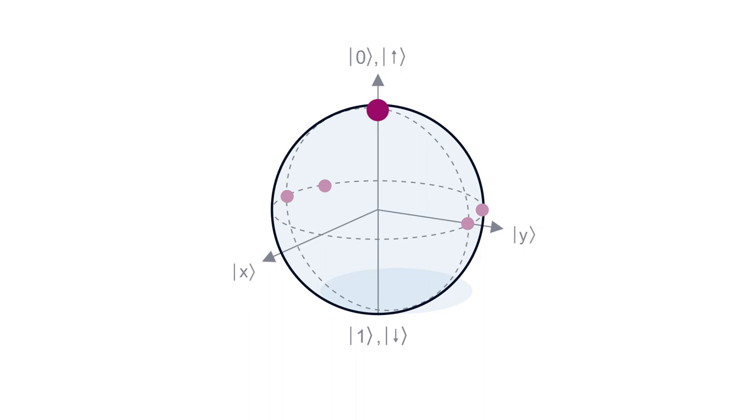Indeed, if the noise fluctuates within the time of the experiment, it is no longer guaranteed that the phase evolution before and after the pi-pulse is identical. Thus, we do not correct for high-frequency noise.